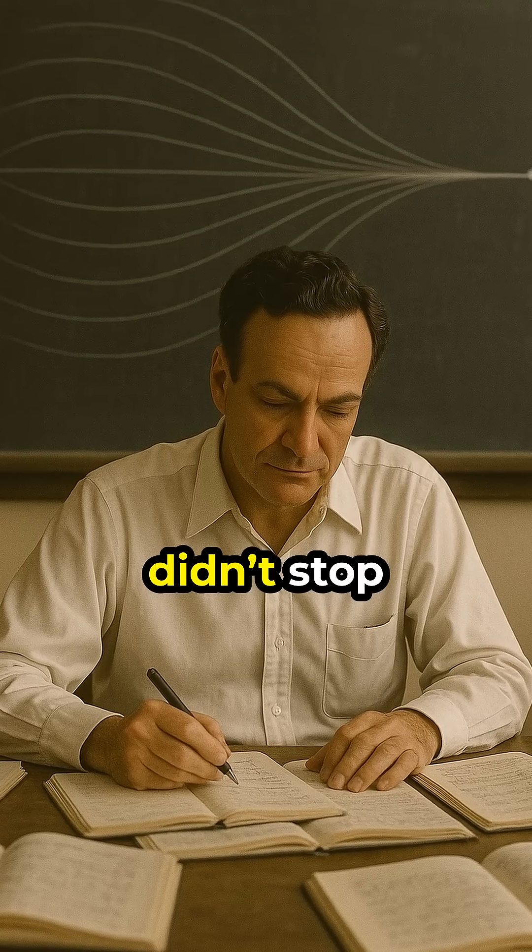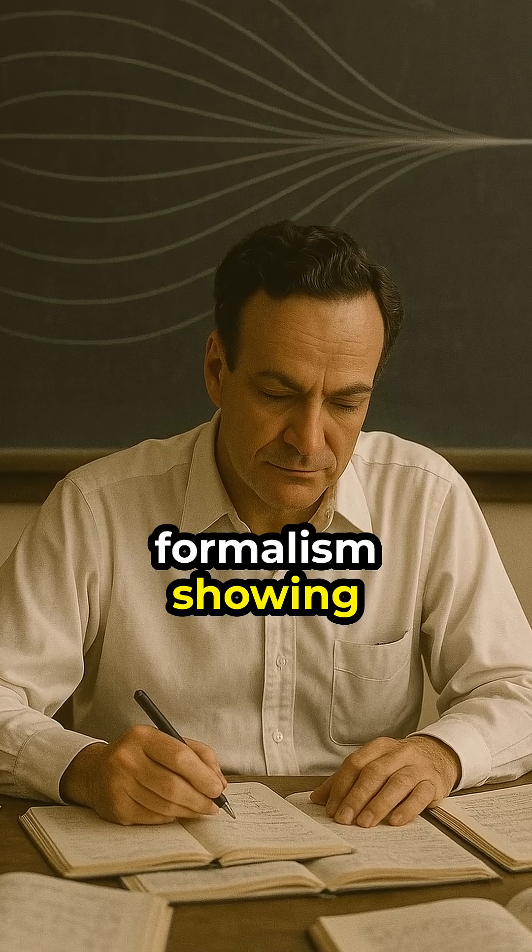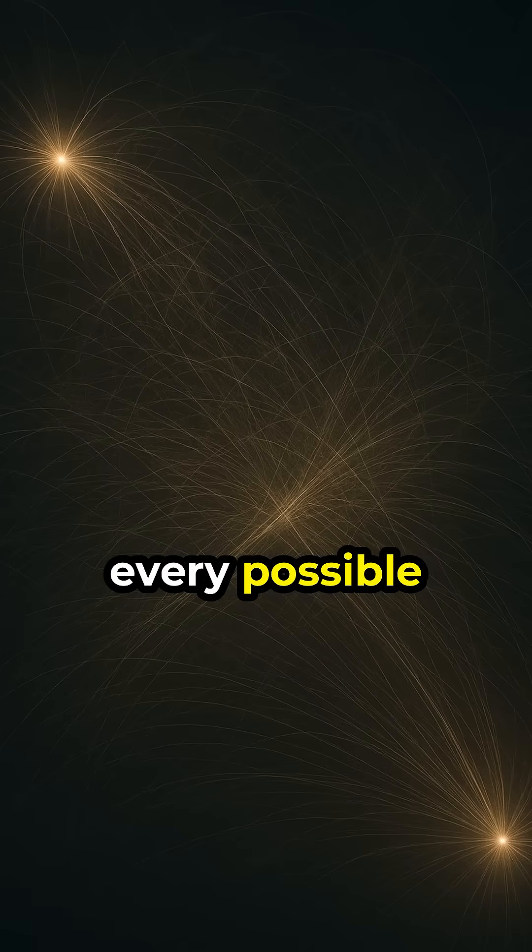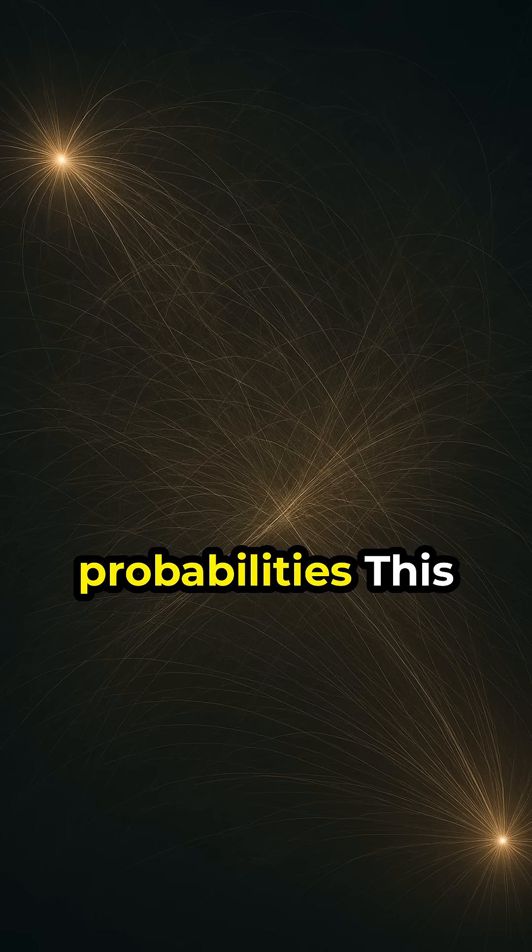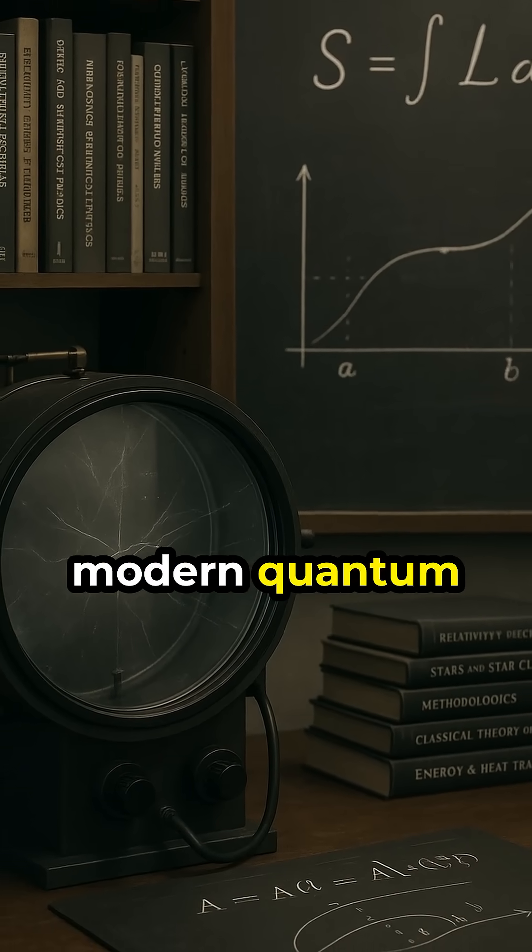But Feynman's genius didn't stop there. He developed the path integral formalism, showing that a particle explores every possible path, and reality emerges from the sum of probabilities. This elegant framework became one of the pillars of modern quantum mechanics.